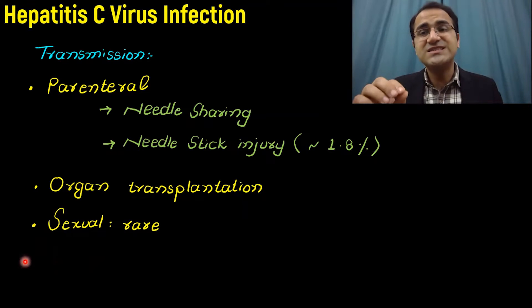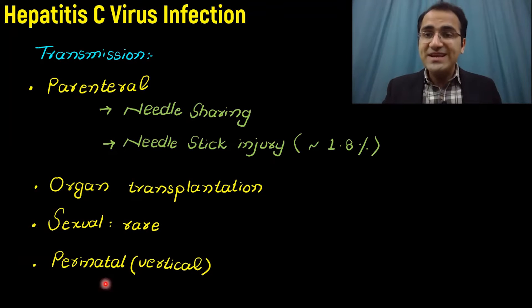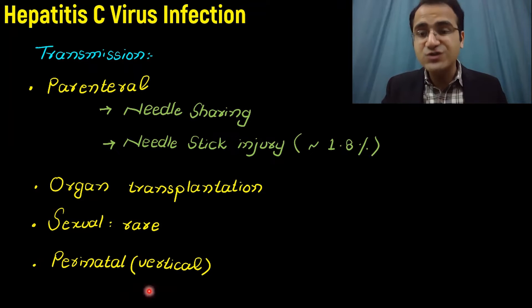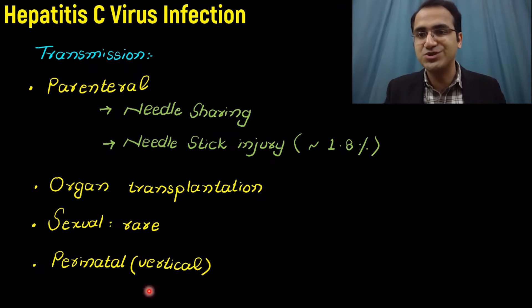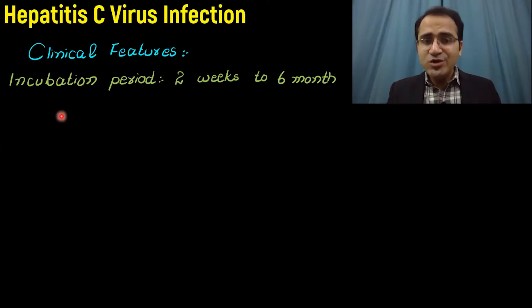It is hepatitis B virus that is transmitted mainly through the sexual route. Perinatal vertical transmission from mother to infant during birth can also result in hepatitis C virus transmission.